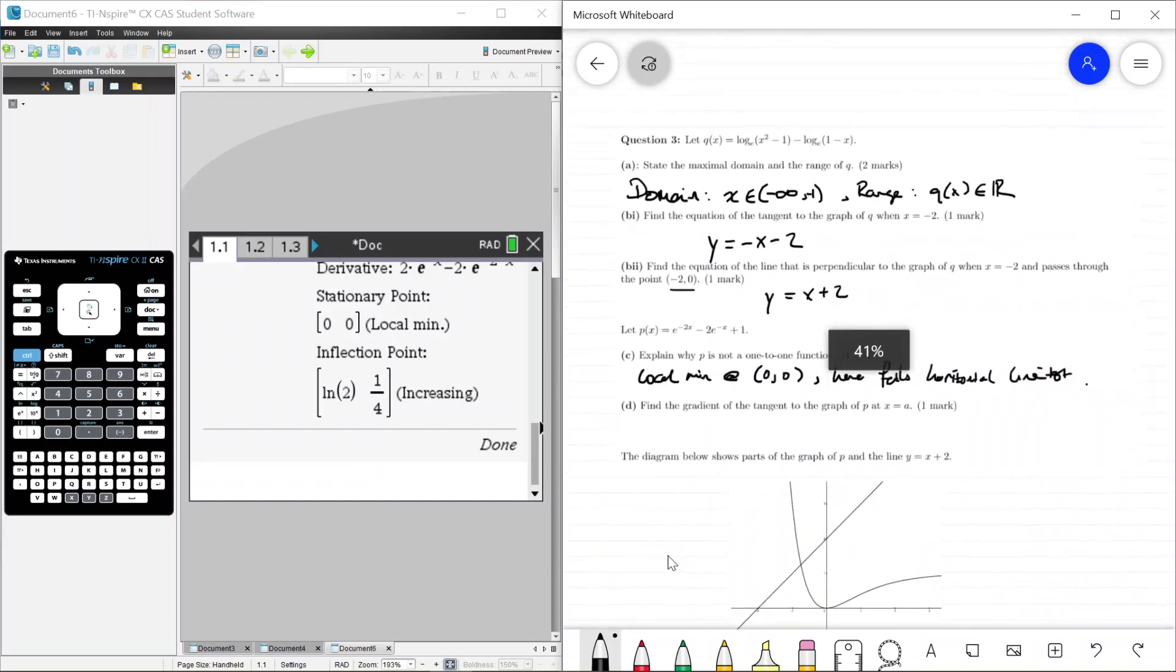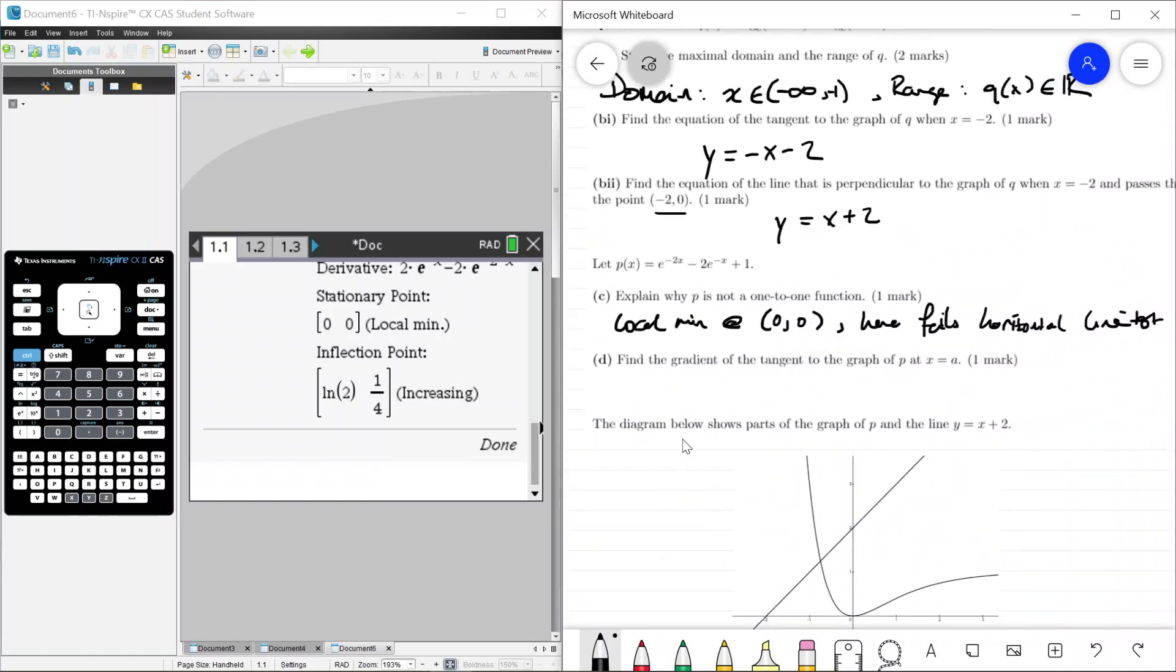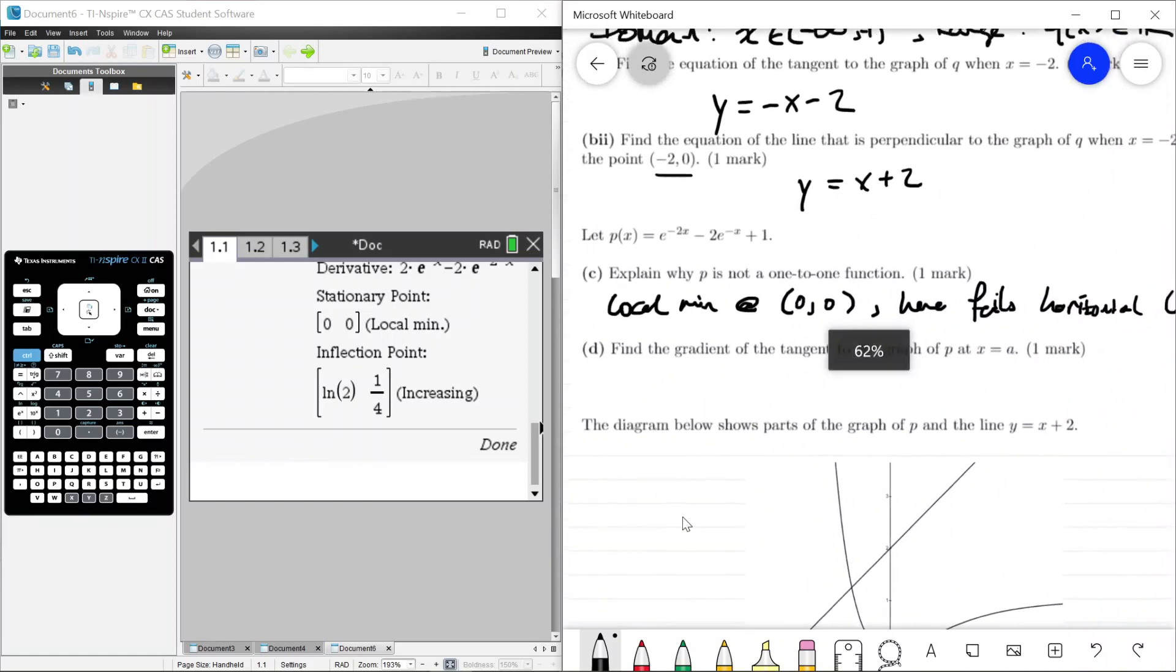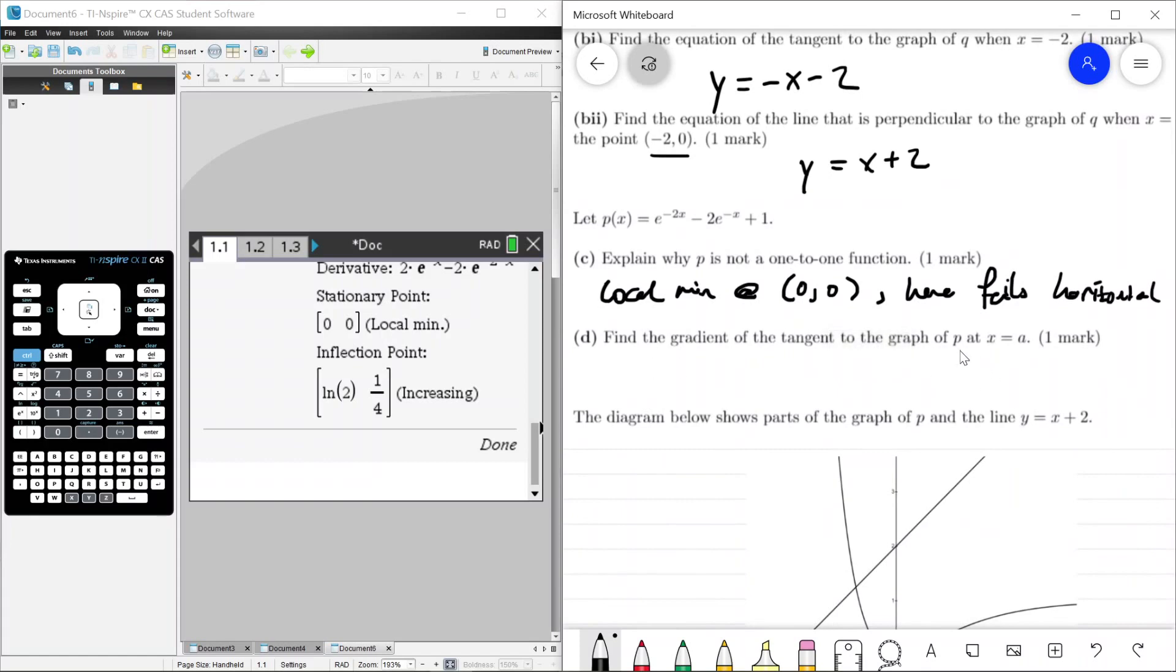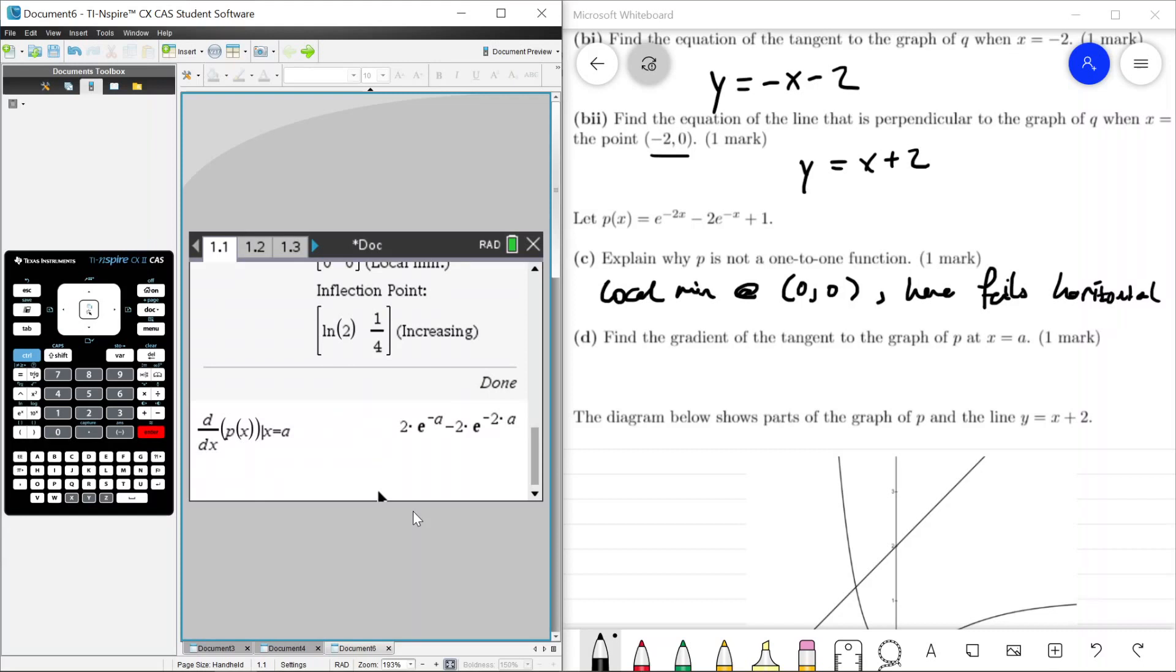Find the gradient of the tangent to the graph of P at X equals A. That's exactly the derivative of P, but evaluated at A. So we can go to CAS, shift minus derivative with respect to X of P of X, such that X equals A. And we get 2 e to the minus A minus 2 e to the minus 2A.